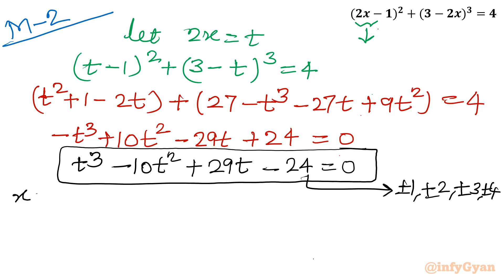If I will put t = 3, what will happen here? See, 3³, so 27, let me write directly. Minus 10t², so 90, plus 29 times 3, 87, minus 24. Just check, 27 and 87 is 114. And 90 and 24, if I will add, then I will get 114. So that means t = 3 is our base solution. So this is our solution.